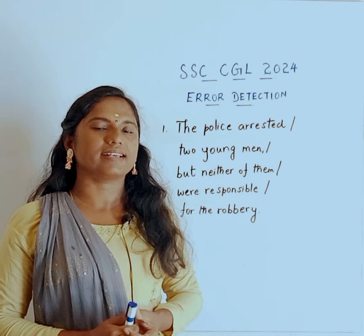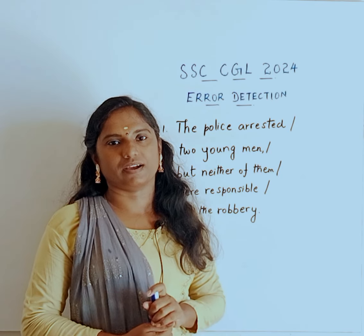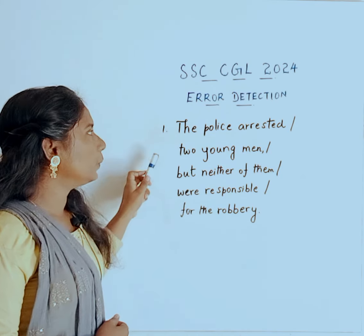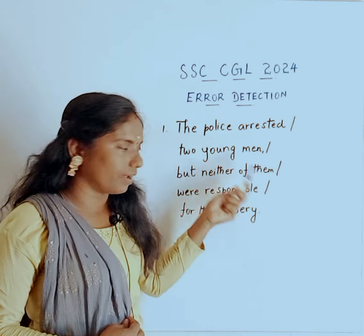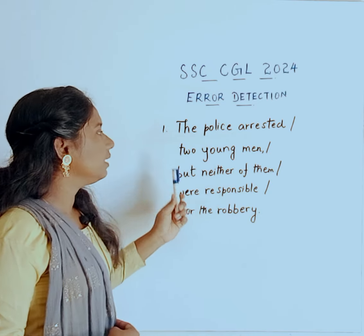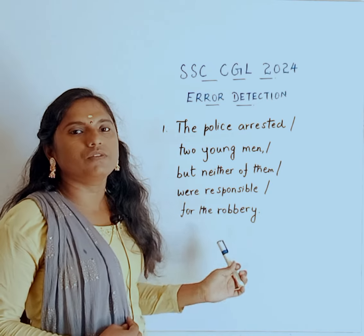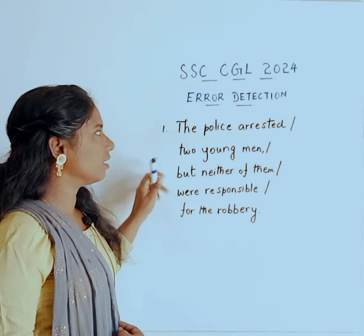Hi everyone! Let's talk about error detection in SSCG. The police arrested two young men, but neither of them were responsible for the robbery. What do you say?